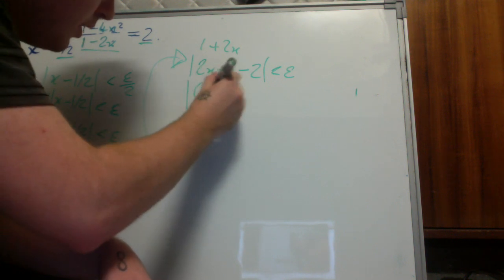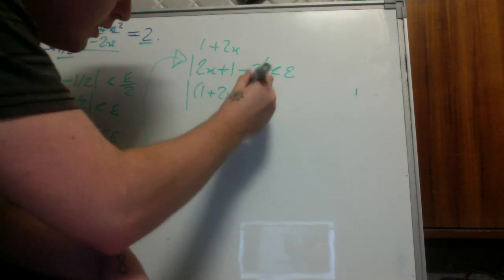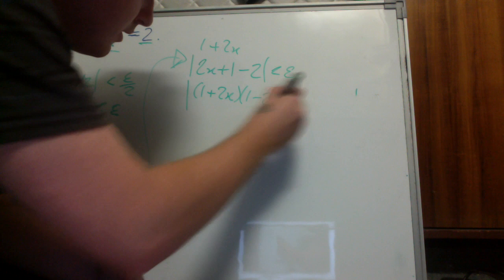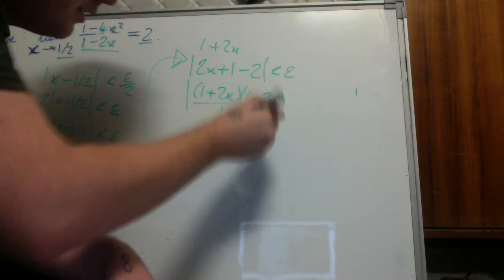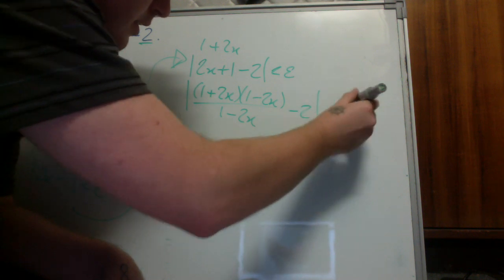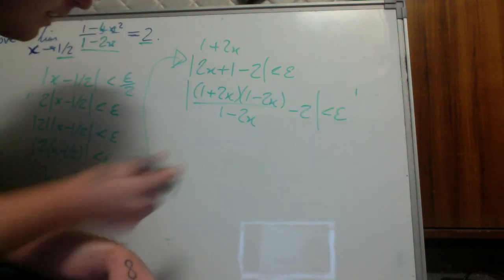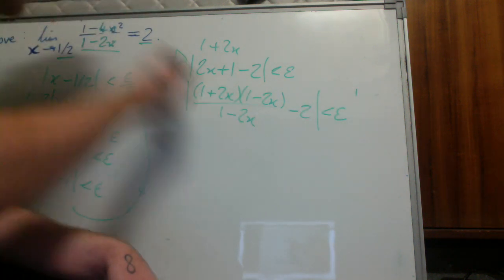So we just say |(1 + 2x)(1 - 2x) / (1 - 2x) - 2| < epsilon. That's obviously the same. This is the function.